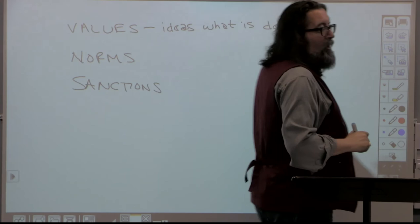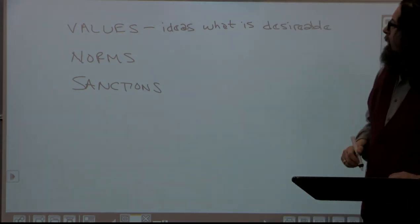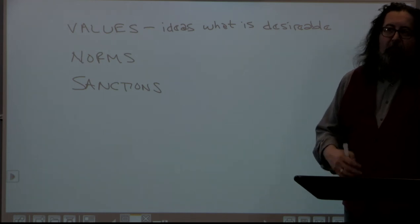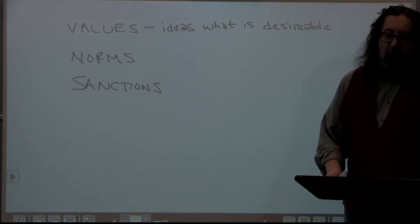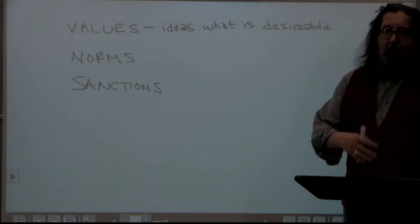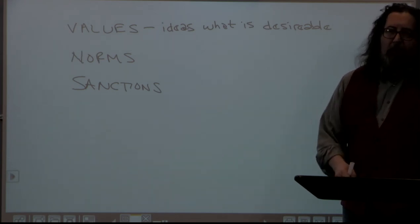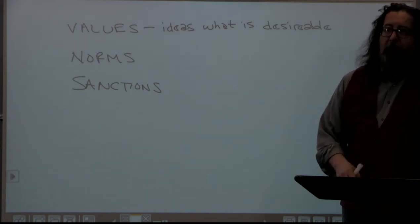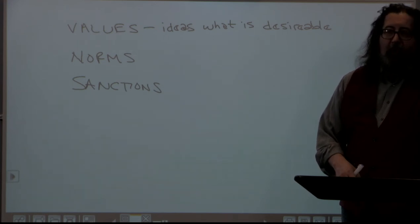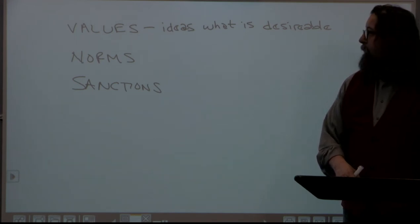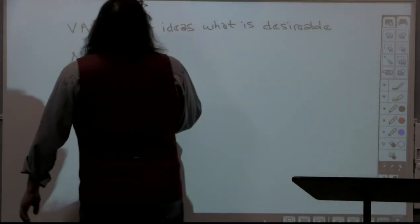When a society determines that certain things are values, it has basically agreed that these are desirable things — things that we want. A common example of an American value is freedom: the concept of being able to do what you want and not have other people tell you what to do or restrict your ability to make decisions. That is something our society finds highly desirable, so we put it down as a cultural value. Norms are, for the most part, rules that support values.